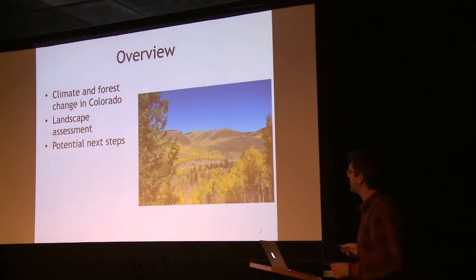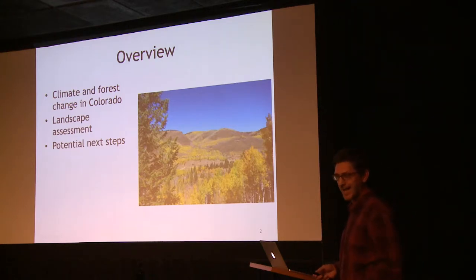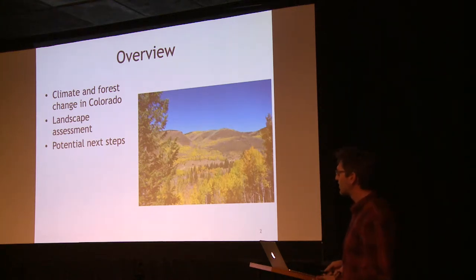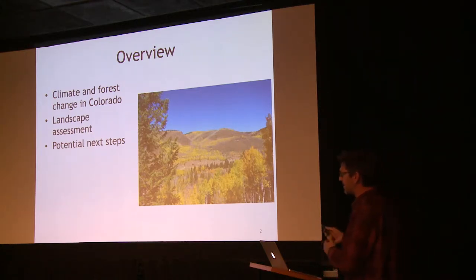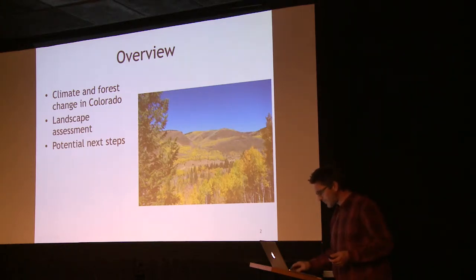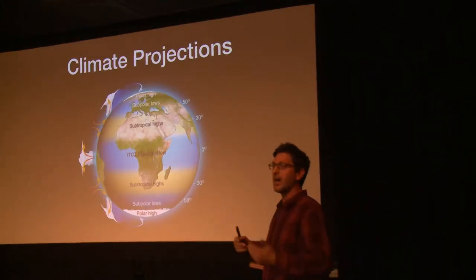Tonight I want to give a little bit of background on climate and forest change in Colorado — talk about what we know, some of the uncertainty, where we think we're going, look at the last 15–16 years to see where that's taking us, and then show you this landscape assessment. There's a lot of uncertainty in climate projections, but there are a few things that we do know and feel pretty confident in.